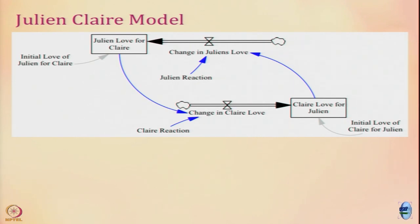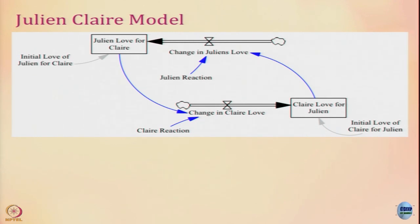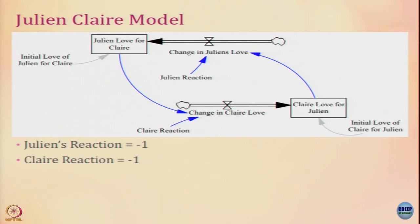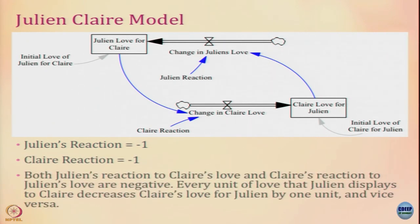Looking at Claire's reaction: if Julian likes her, she is annoyed and dislikes him; if Julian ignores her, she likes him. So it is also in the opposite direction — we put Claire's reaction as minus 1. Both Julian's reaction to Claire's love and Claire's reaction to Julian's love are negative. Every unit of love Julian displays to Claire decreases Claire's love for Julian by 1 unit, and vice versa.